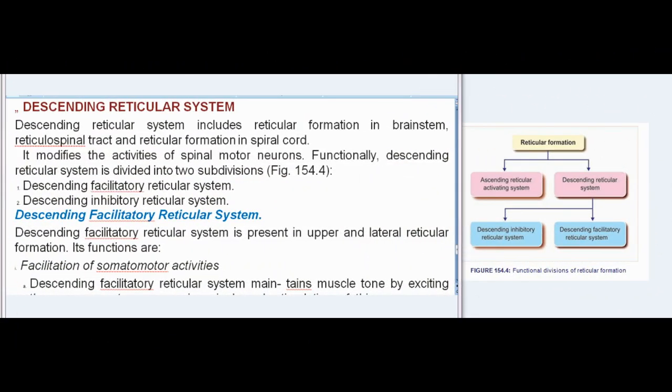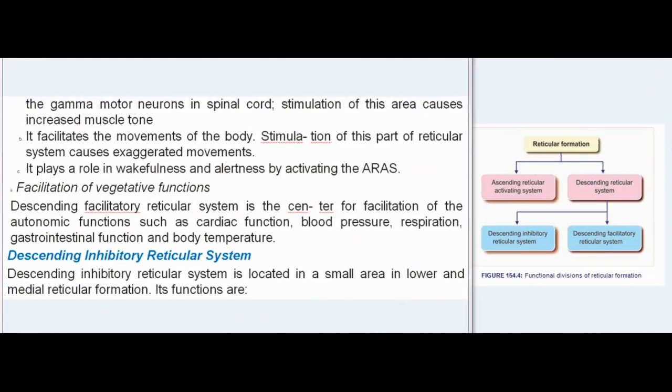Descending Reticular System: The descending reticular system includes reticular formation in the brainstem, reticulospinal tract, and reticular formation in the spinal cord. It modifies the activities of spinal motor neurons. Functionally, it is divided into two subdivisions — descending facilitatory reticular system and descending inhibitory reticular system. The descending facilitatory reticular system is present in the upper and lateral reticular formation, and its functions include facilitation of somatomotor activities and maintaining muscle tone by exciting the gamma motor neurons in the spinal cord.